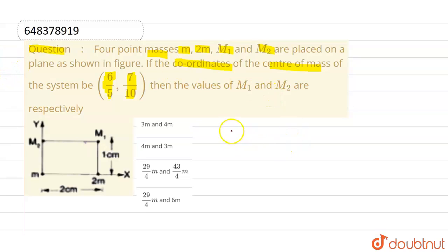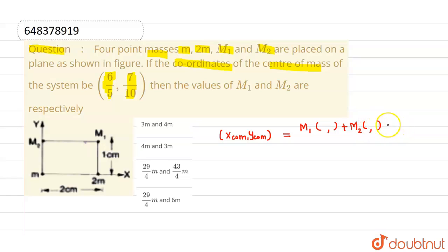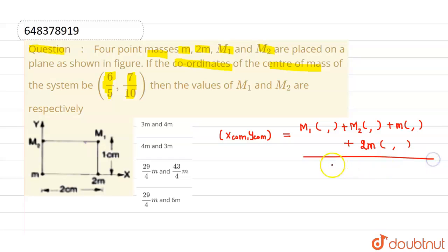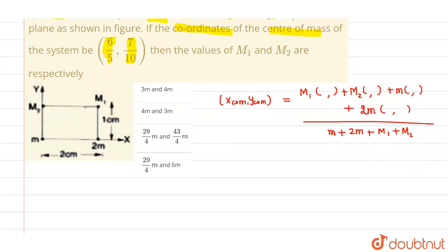The coordinates of center of mass, denoted by x_cm and y_cm, are given by mass1 times their coordinates plus mass2 times their coordinates plus small m times their coordinates plus 2m times their coordinates, divided by the total mass: m plus 2m plus M1 plus M2. We are already given that the center of mass is at (6/5, 7/10).